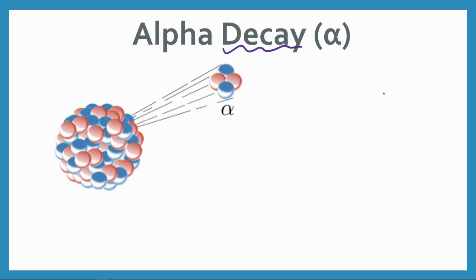It's falling apart and part of it is being released. In alpha decay, it's this particle right here that's being released. This is the alpha particle and this little symbol right here stands for alpha.